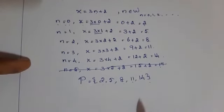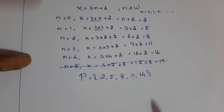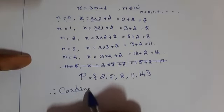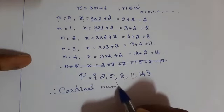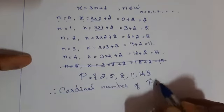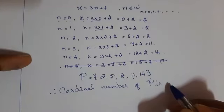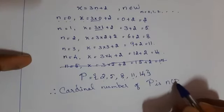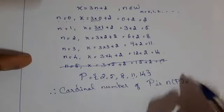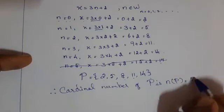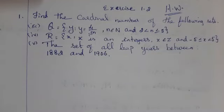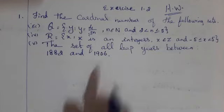The cardinal number of capital P — that is N of capital P — is equal to 5, since there are 5 elements. Students, try to do these problems.